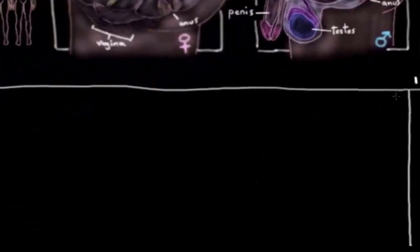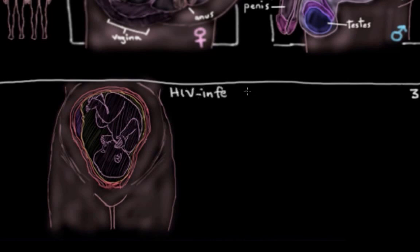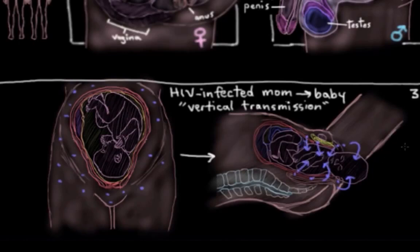The third most frequent route of HIV transmission is from an HIV-infected mom to her baby during childbirth. Around 90% of the HIV we see in kids was acquired this way — from their mom during birth, which is also called vertical transmission. The thought is that babies are exposed to mom's blood and vaginal fluid on the way out of the birth canal, and because newborn babies essentially have very thin skin, it's not hard for HIV to get on board.